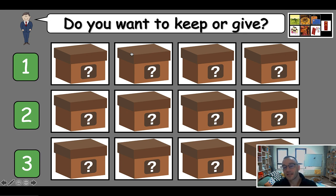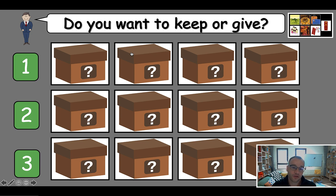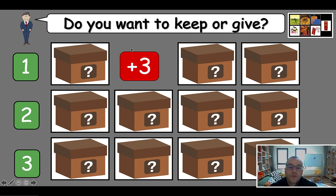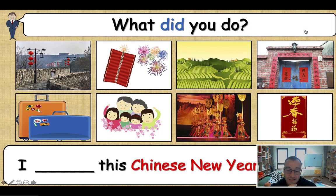If they decide to keep, whatever's behind the mystery box their team will keep. If they decide to give, you have to ask them which team they want to give it to — my class has four teams so they choose from the other three. Because it could be a negative or a positive number — they don't know. If they think it might be a negative number, they'll want to give it to another team. Let's say they decide to keep — you click it and it's plus three, so that team gets three points. Then you rinse and repeat with the next team.